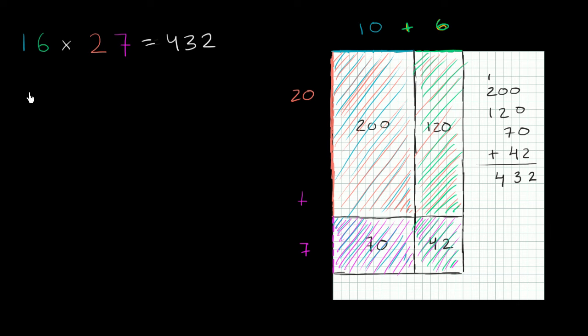And you might be saying, hey Sal, why did we go through all of this business? I've seen before that if I take 16 times 27 like this. You've probably learned this type of a process, 16 times 27. Let's start with the 7 in the ones place. And you do 7 times 6 is 42. You write the 2 down, and you carry the 4. Right when you did that 7 times the 6, we essentially calculated this right over there.